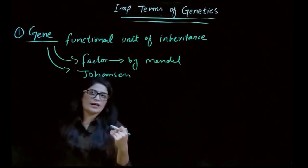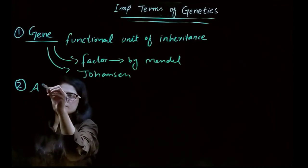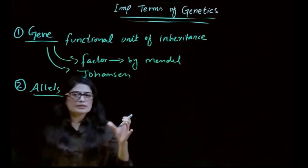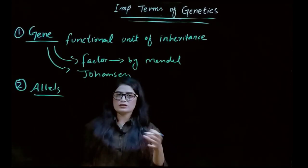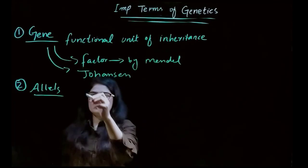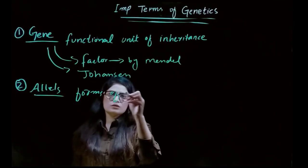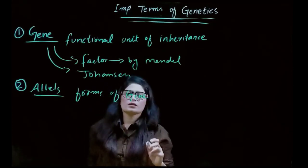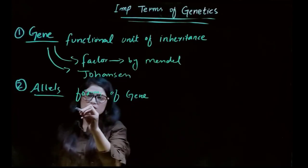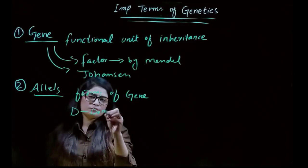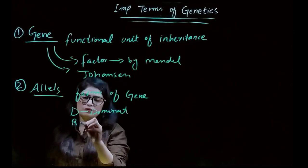The second term we have is alleles. Alleles are actually the two forms of a gene. One form is dominant and the other is recessive.